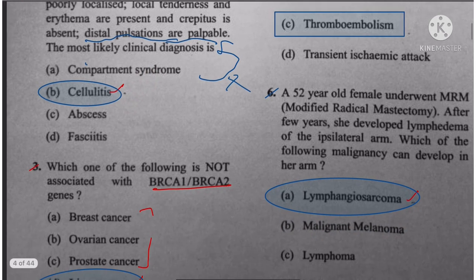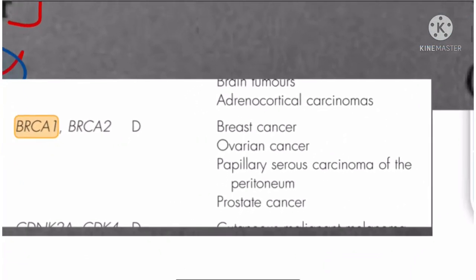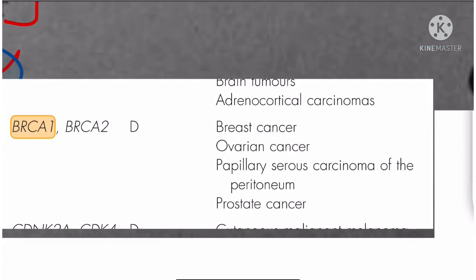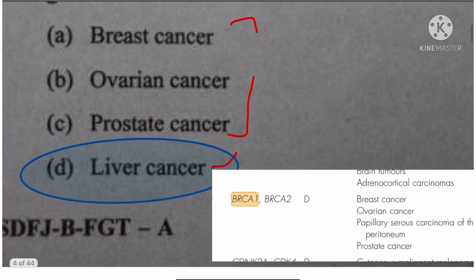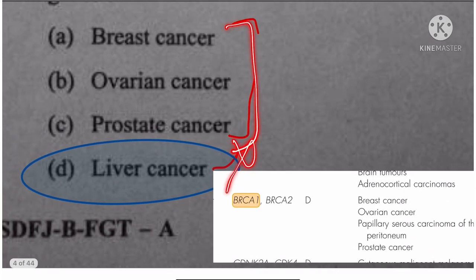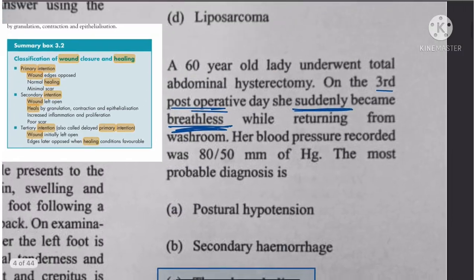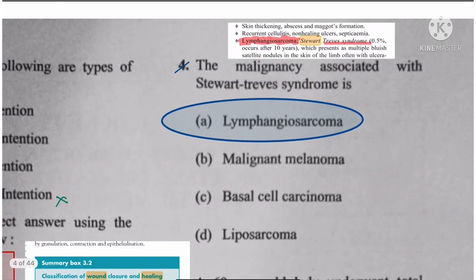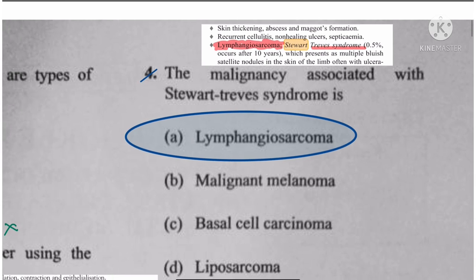Question 3: Which cancers are not associated with BRCA1 and BRCA2? Cancers associated with BRCA1 and BRCA2 include breast cancer, ovarian cancer, papillary serous cancer, and prostate cancer. We don't have liver cancer in this list. So the answer excludes liver cancer.